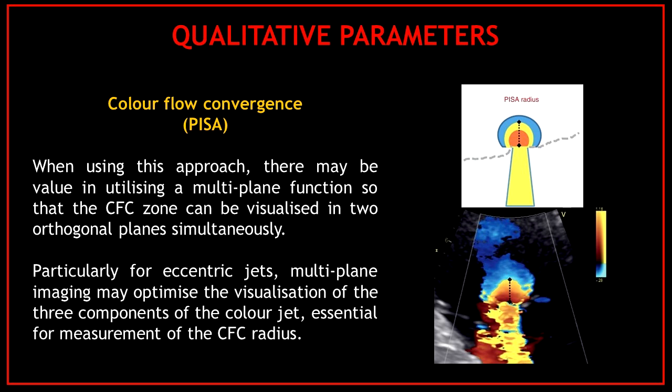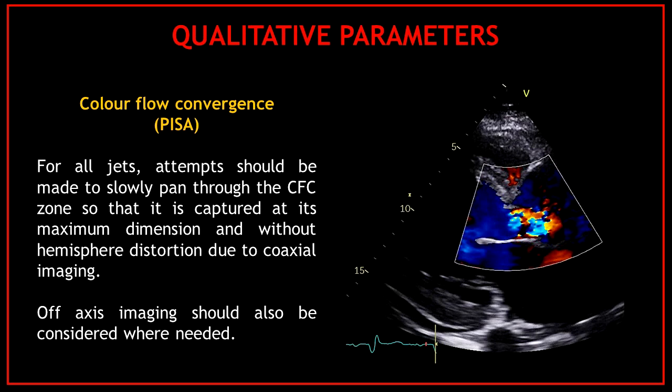When using this approach, there may be value in utilizing a multi-plane function so that the color flow convergence zone can be visualized in two orthogonal planes simultaneously. Particularly for eccentric jets, multi-plane imaging may optimize visualization of the three components of the color jet, essential for measurement of the color flow convergence radius. For all jets, attempts should be made to slowly pan through the color flow convergence zone so that it is captured at its maximum dimension and without hemisphere distortion due to coaxial imaging. Off-axis imaging should also be considered where needed.